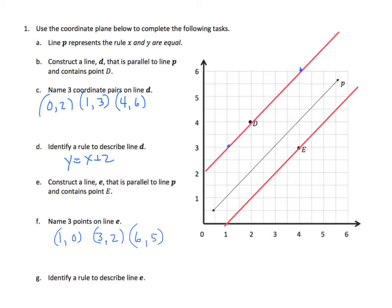So, what's the rule there? Well, if I take 1 and I subtract 1, I get 0. 3, subtract 1, and I get 2. 6, and I subtract 1, I get 5. So, the rule would be Y equals X minus 1.